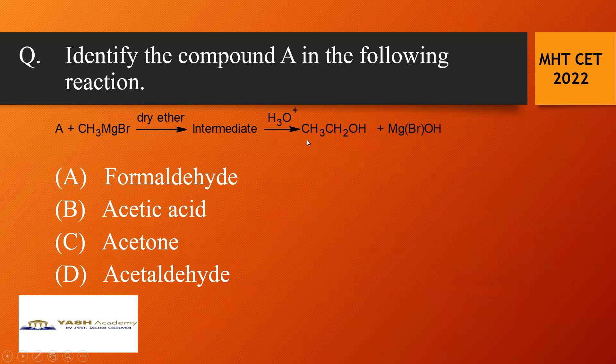So if you observe the product CH3CH2OH, so this CH3 group in this ethyl alcohol it belongs from the Grignard reagent that is methyl magnesium bromide. So the starting compound A it should not contain any methyl group. So acetic acid there is a CH3. In acetone there is a CH3. In acetaldehyde there is also CH3.